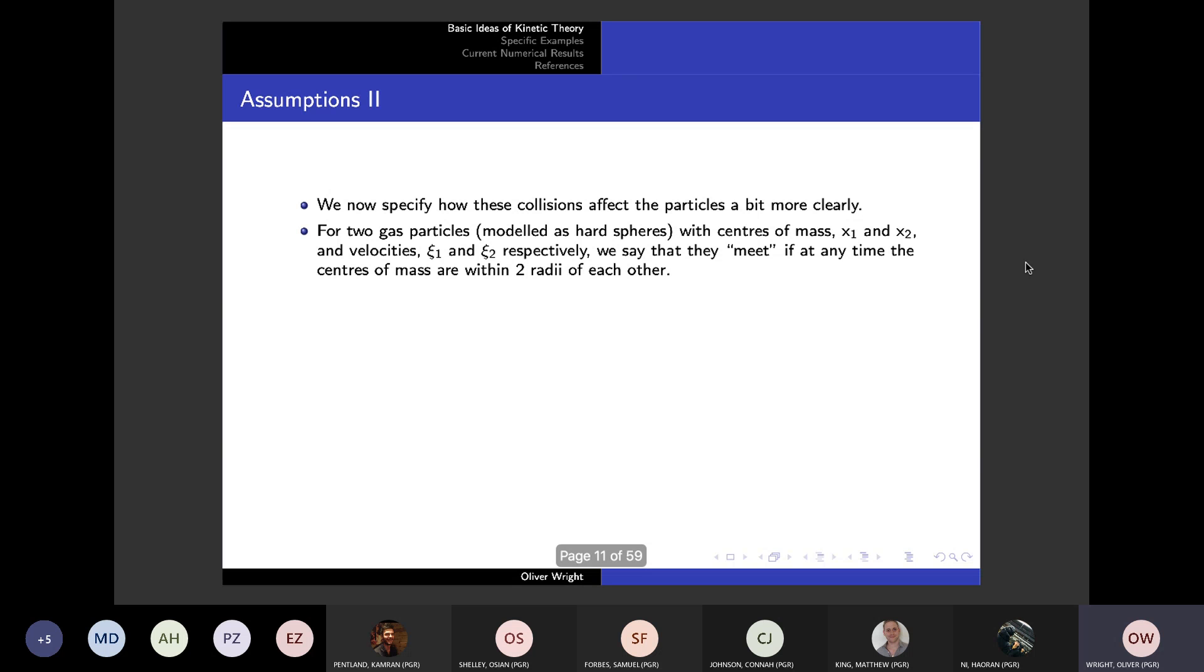For two particles, we say that they hit each other when their centres of masses are within two radii of each other, however large the radii of the sphere is. This is basically saying that they are touching, at least touching each other.